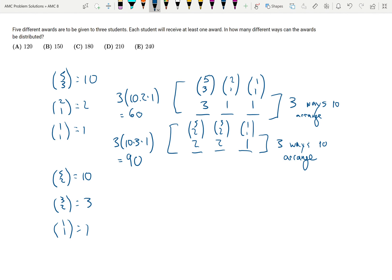So the number of different ways the awards can be distributed is sixty plus ninety, which is one hundred fifty. The answer is choice B.